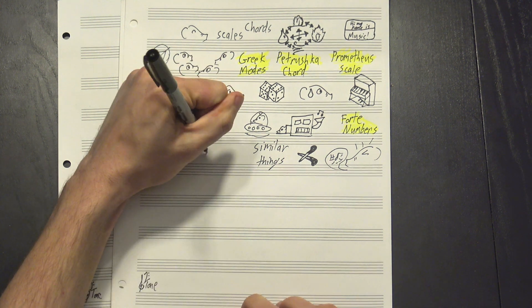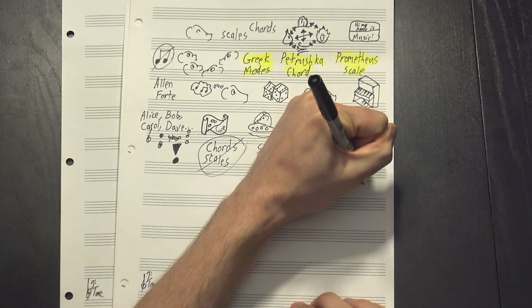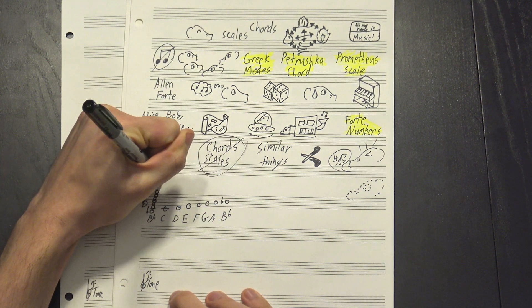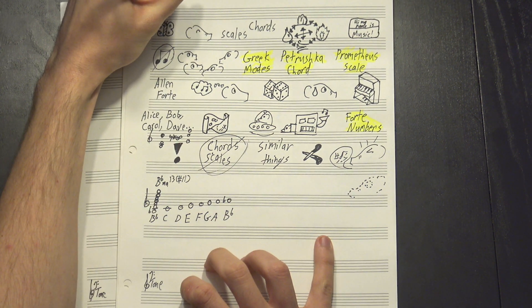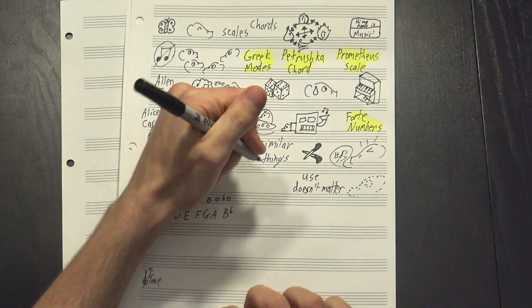To start off, let's forget the difference between chords and scales. Don't get me wrong, it's an important distinction, but it's also a somewhat vague one. This scale has all the same notes as this chord. The only difference is how they're used. For this, though, use isn't important, so we're lumping them all together and just calling them sets.